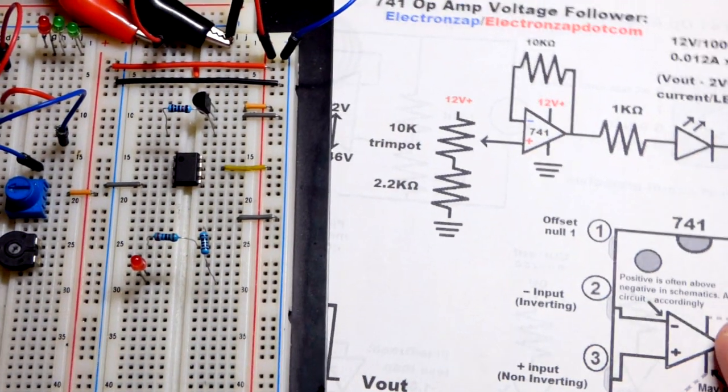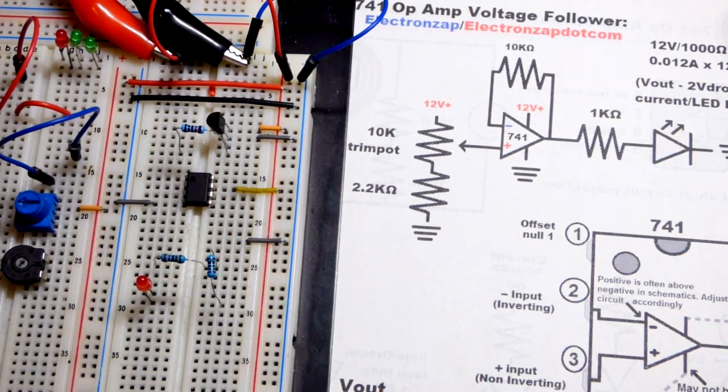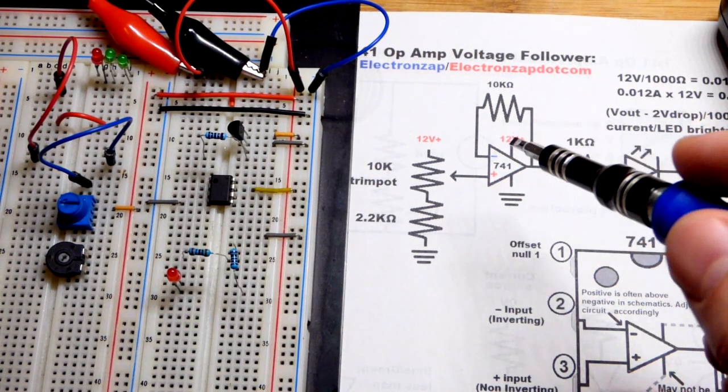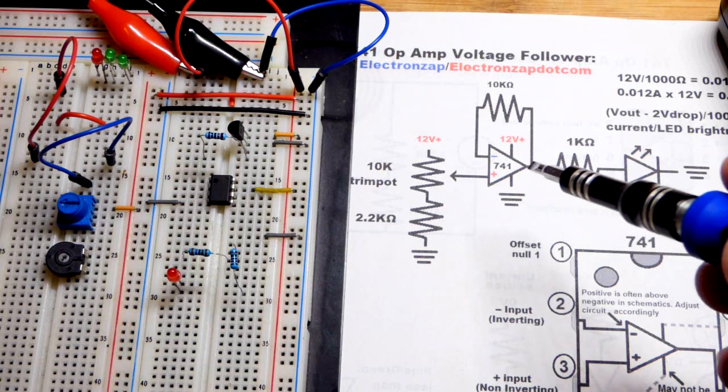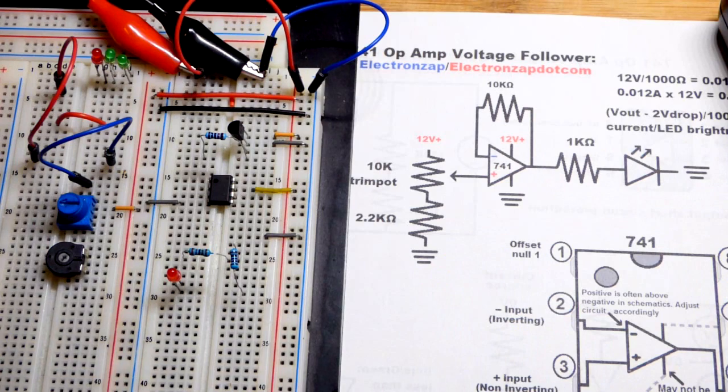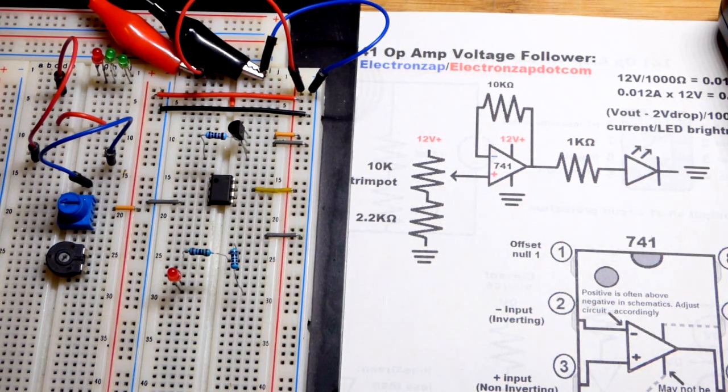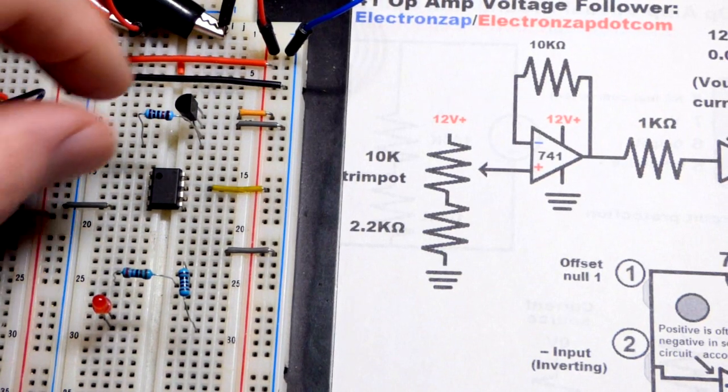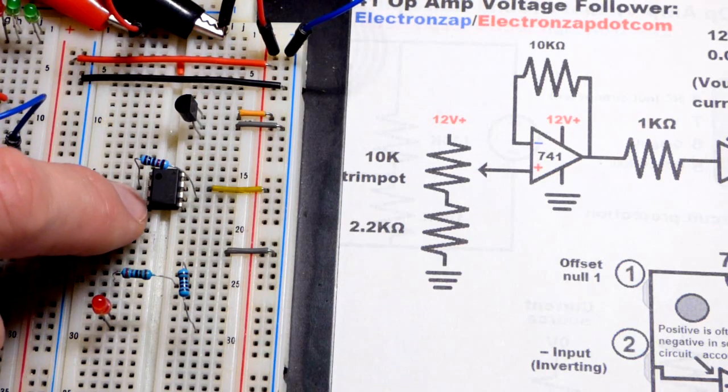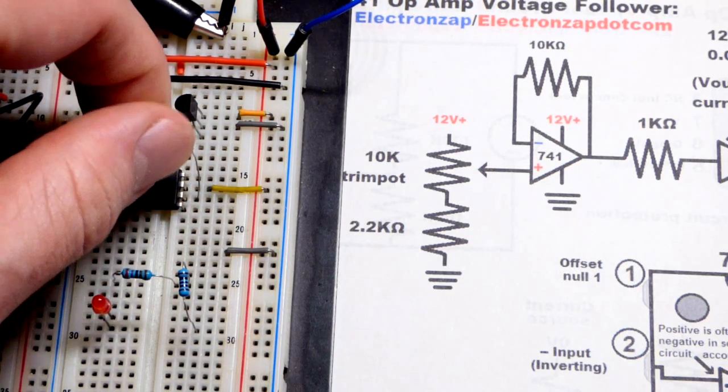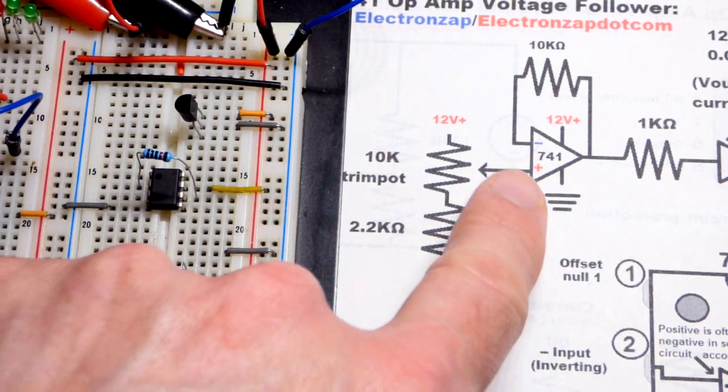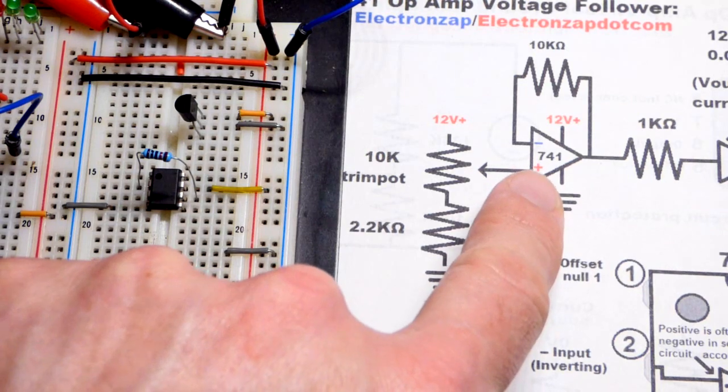Now we come to the schematic right there. Pretty straightforward. Let's begin with the negative feedback because it's out of the way of everything else. The output feeds directly to the inverting input for a voltage follower. All we want to do is make the voltage at both the inverting input and non-inverting input the same. So we have the feedback.